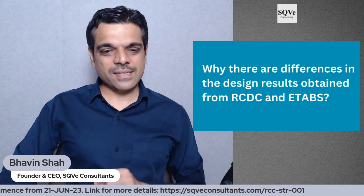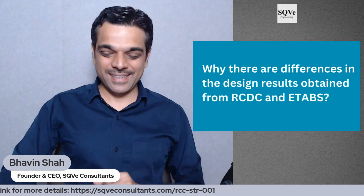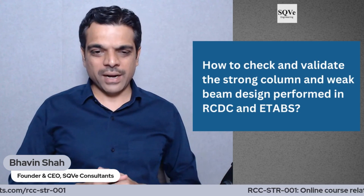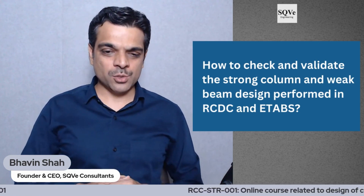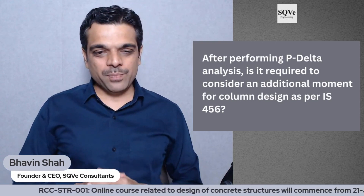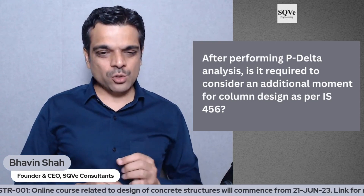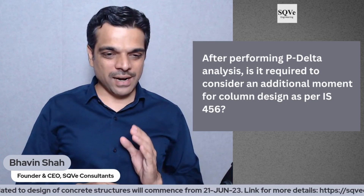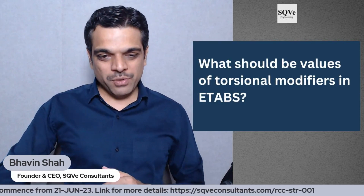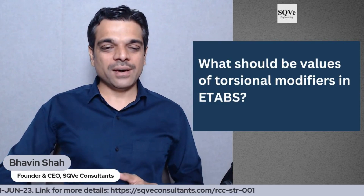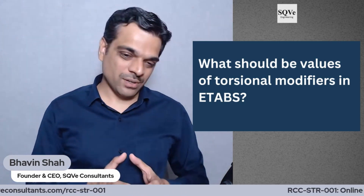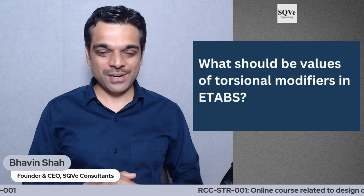Why are there differences in the design results obtained from RCDC and ETABS? How to check and validate the strong column and weak beam design performed in RCDC and ETABS? After performing P-delta analysis, is it required to consider an additional moment for column design as per IS456? What should be the values of torsional modifiers in ETABS, and if they are to be considered, what are the appropriate values?